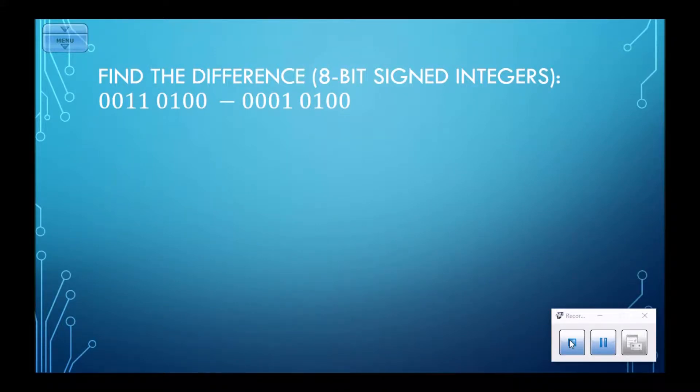Let's do a binary subtraction using the two's complement method. Here I have the 8-bit signed integer 0011 0100, and I want to subtract 0001 0100.